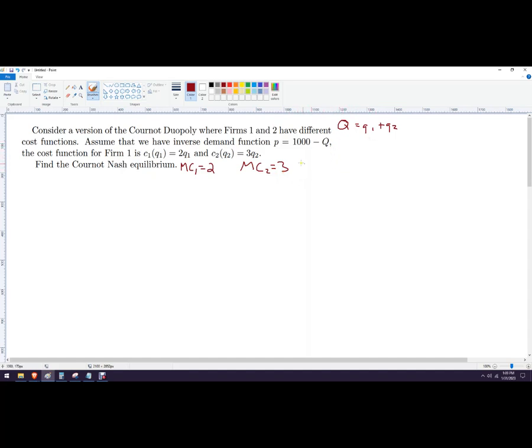Now, basically, we've just got a profit maximization problem for both firms, which means I want to find the marginal revenue equal to marginal cost of the first firm. And over here, the marginal revenue of the second firm equal to the marginal cost of the second firm. So here we go.